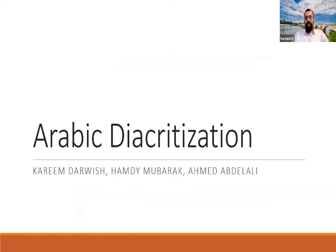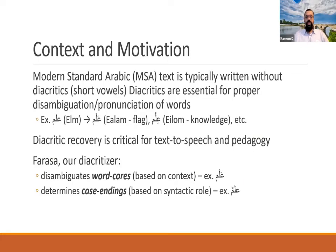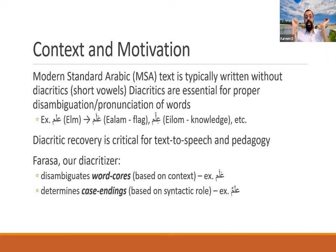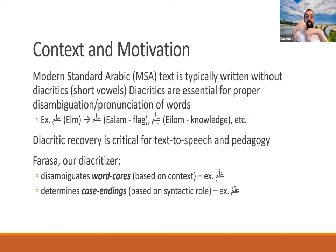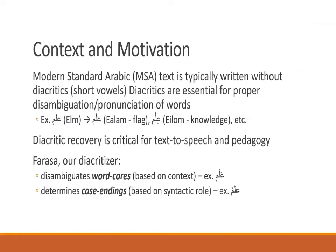The motivation is that diacritization can be used for applications such as text-to-speech, which is really important. Arabic diacritics have two types. The first type is core word diacritics, which disambiguate what a word means in context. The other type is called the case ending, which appears typically at the end of the stem or word and marks the syntactic role of the word in the sentence.